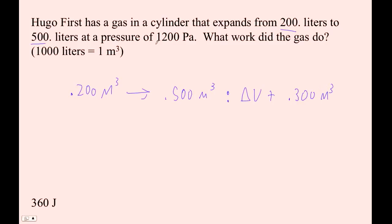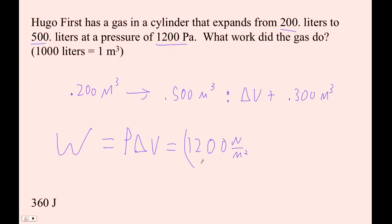Pressure is 1,200 pascal, so work equals pressure times change in volume — 1,200 newtons per square meter times 0.300 cubic meters. 3 times 1,200 would be 3,600, but 0.3 times 1,200 would be 360. And it would be positive.